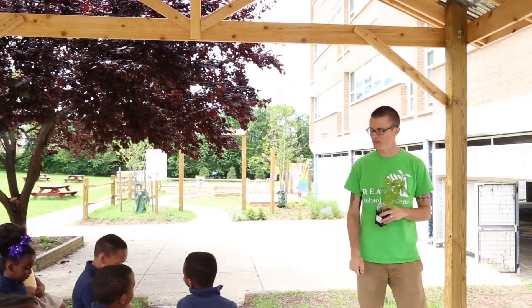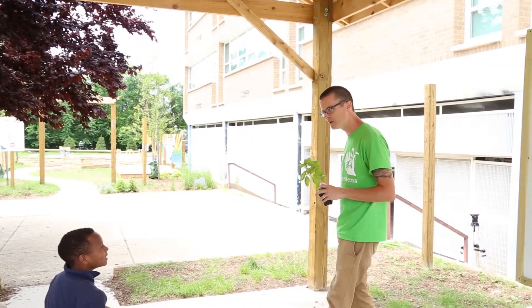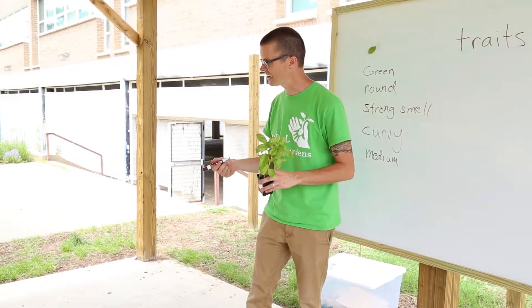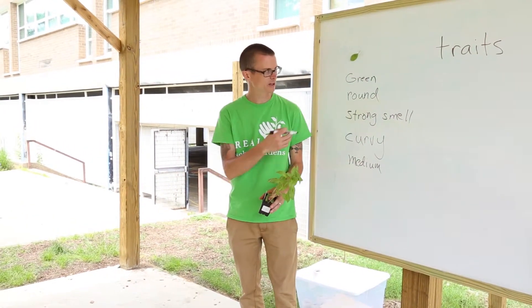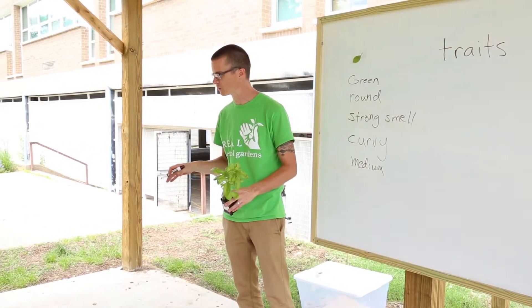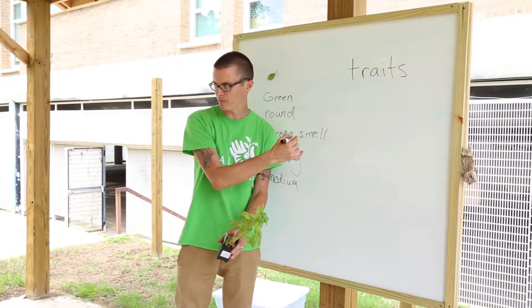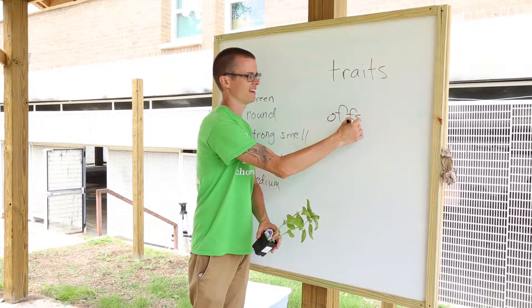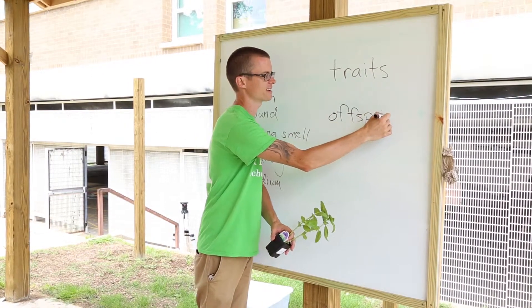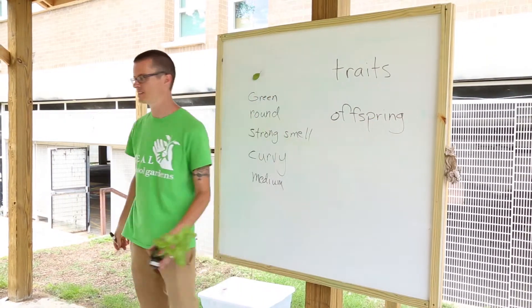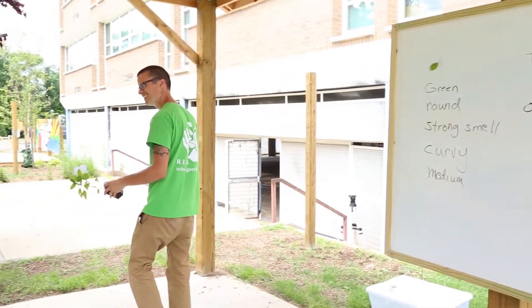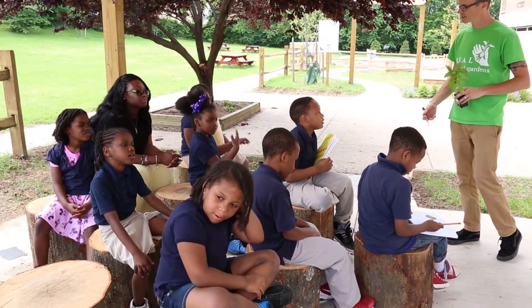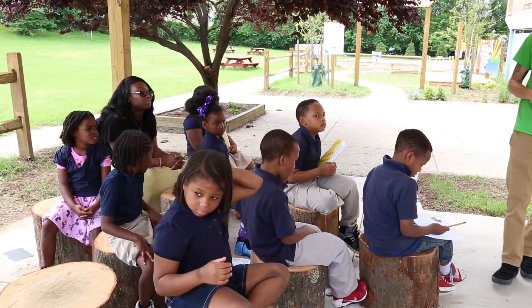The puppy is the baby dog — that's why we call it a puppy. And the babies — when we're being scientists, and that's what we are today: we're taking samples, we're working in the field, we're being scientists — we don't use the word babies, we use the word offspring. Can you say that for me? Offspring. Offspring are the babies. They're the little ones that come from the parents.